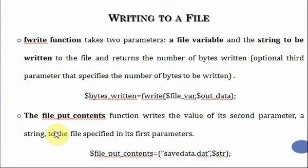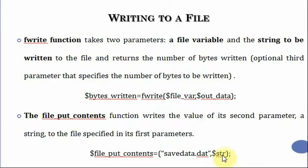Next we have file_put_contents, which is the opposite of file_get_contents seen in the previous video. file_get_contents reads the contents of a file, whereas file_put_contents writes. This function writes the value of the second parameter, a string, to the file specified in the first parameter. Whatever is present in the variable 'str' is written into the file named 'savedata.txt'.